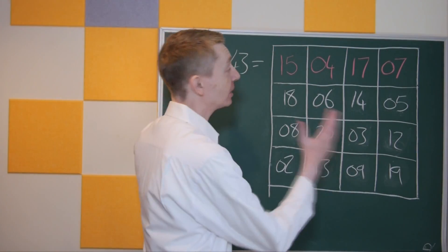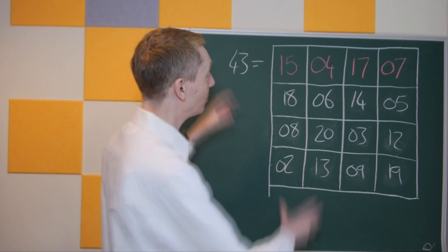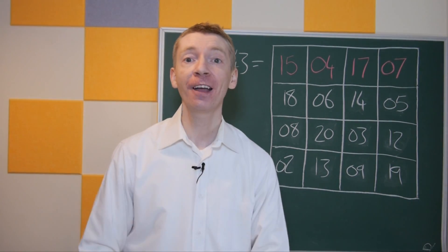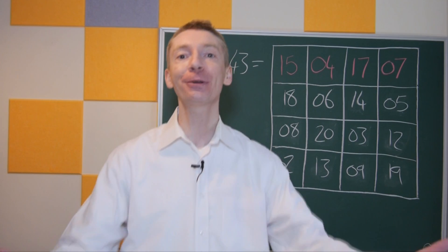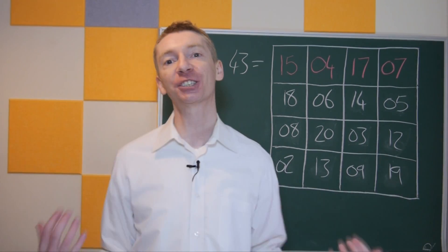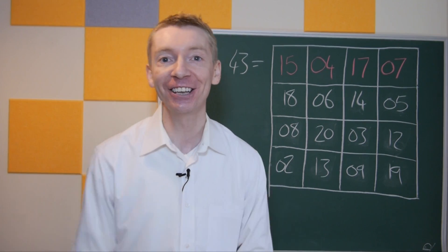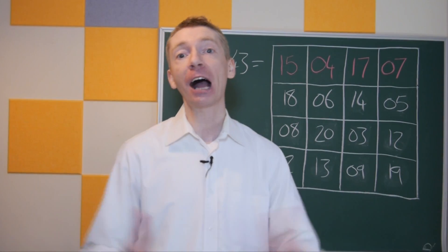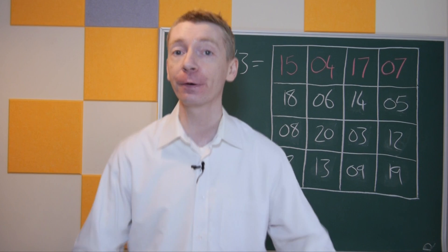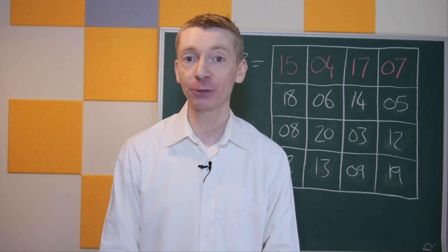And here it is again — this is Euler's birthday magic square, but this time without using any repeated values. And that is Euler's method for making magic squares. I hope you enjoy it, I hope you try it out. You can make a birthday magic square for yourself, or maybe for your friends and family — it's a kind of nerdy gift. I'm sure I'll have lots to talk about in a follow-up video. But for now, thanks for watching.